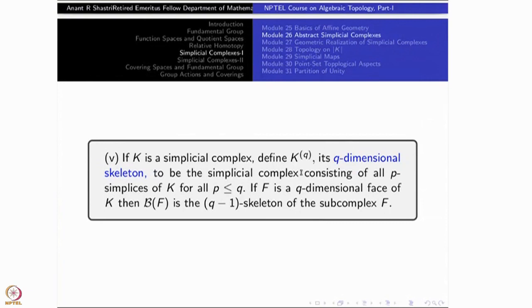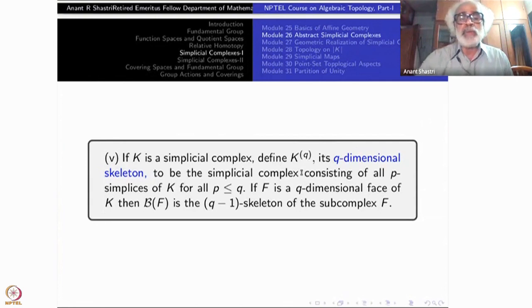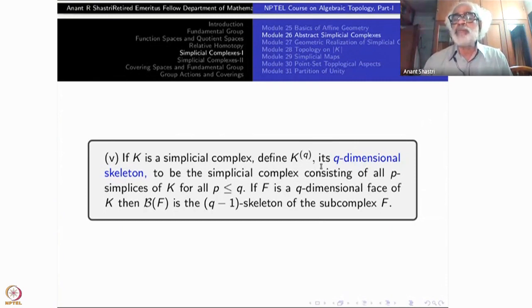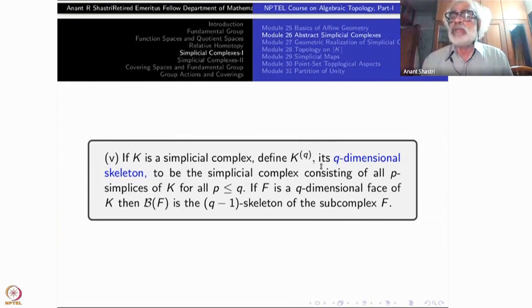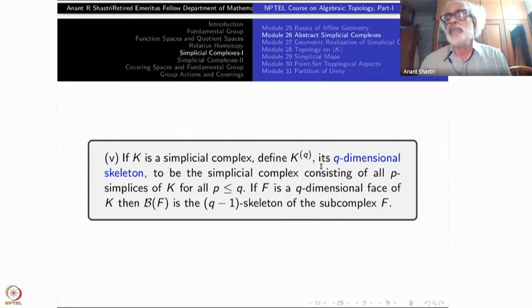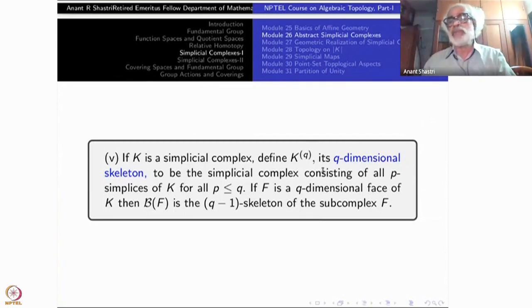The Q-dimensional skeleton will include faces of dimension up to Q. The 0-dimensional skeleton has only vertices. The one-dimensional skeleton has all edges. The two-dimensional skeleton has triangles, edges, and vertices. But suppose there are no triangles at all; then the two-, three-, four-dimensional skeletons will all be just the one-dimensional skeleton. In particular, a Q-dimensional skeleton is a sub-complex of the (Q+1)-dimensional skeleton and so on.